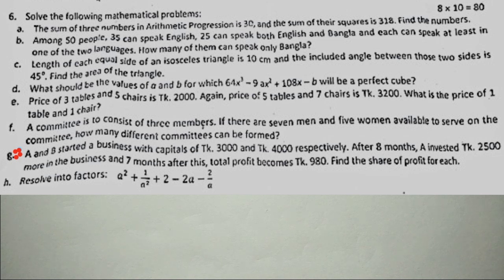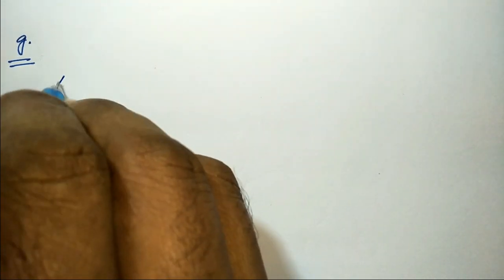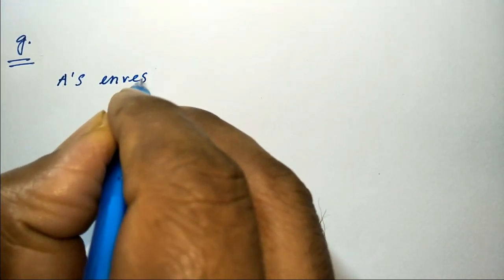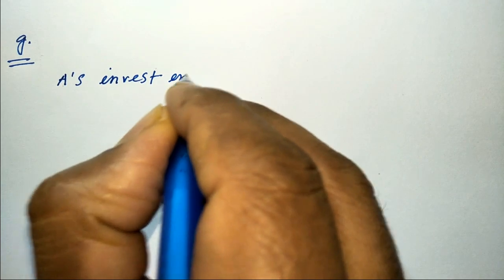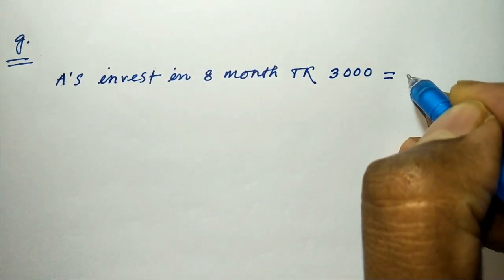A's investment career position: after one month, the total profit — I know what A's share will be. The profit share depends on equivalent investment. Here, A invests for eight months, equivalent to a certain amount.